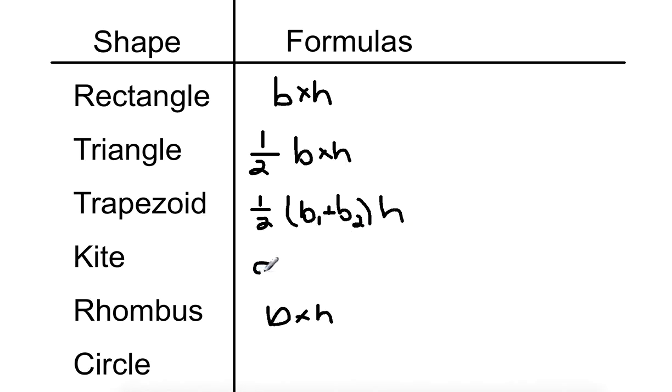A kite, you take the diagonal, one of the diagonals, you times it by the other diagonal, and you divide that whole thing by two.